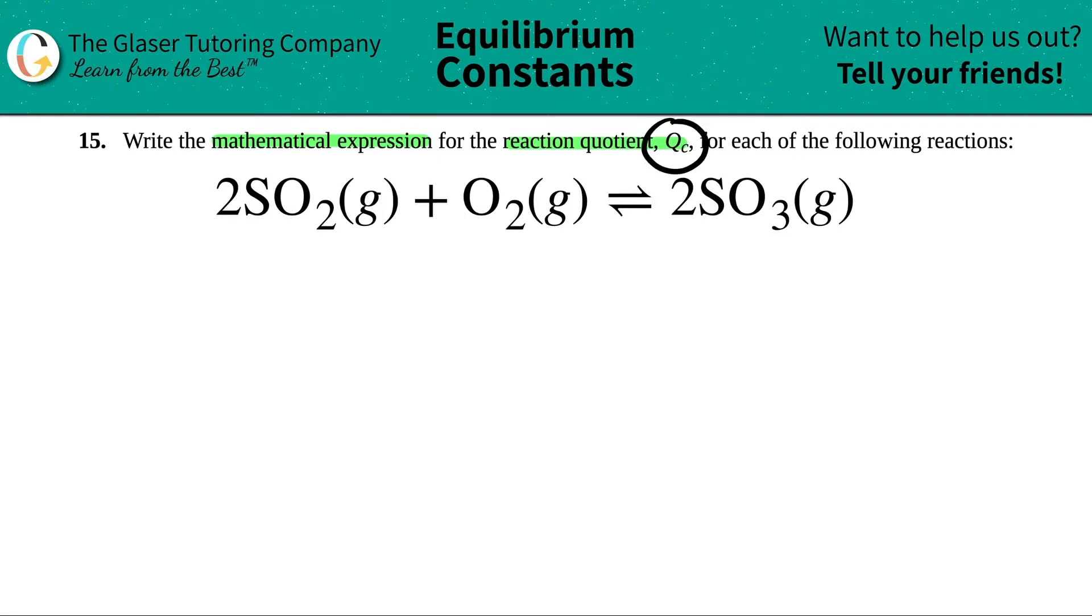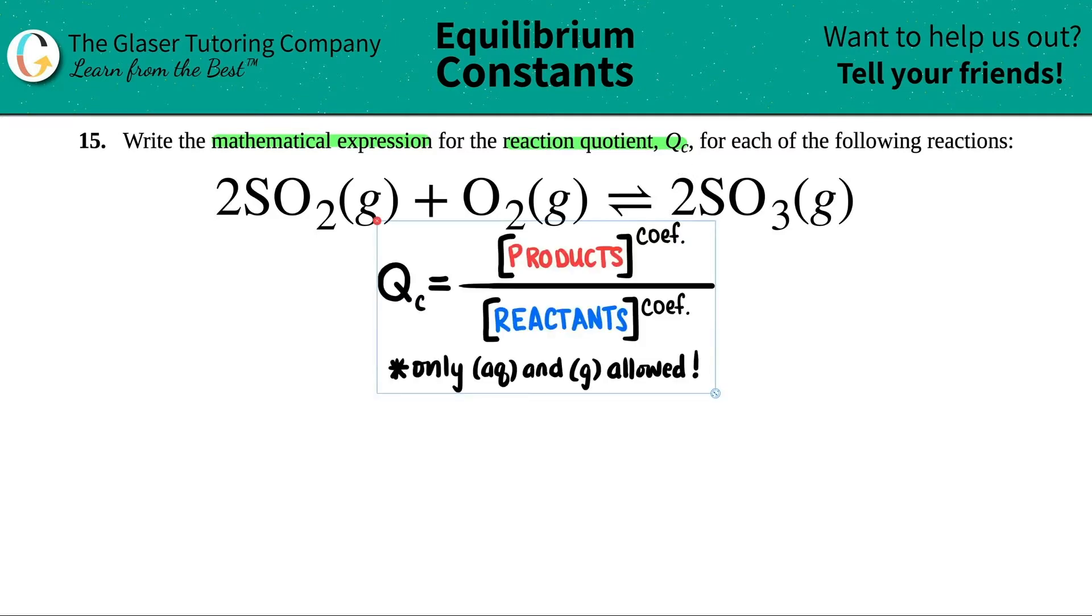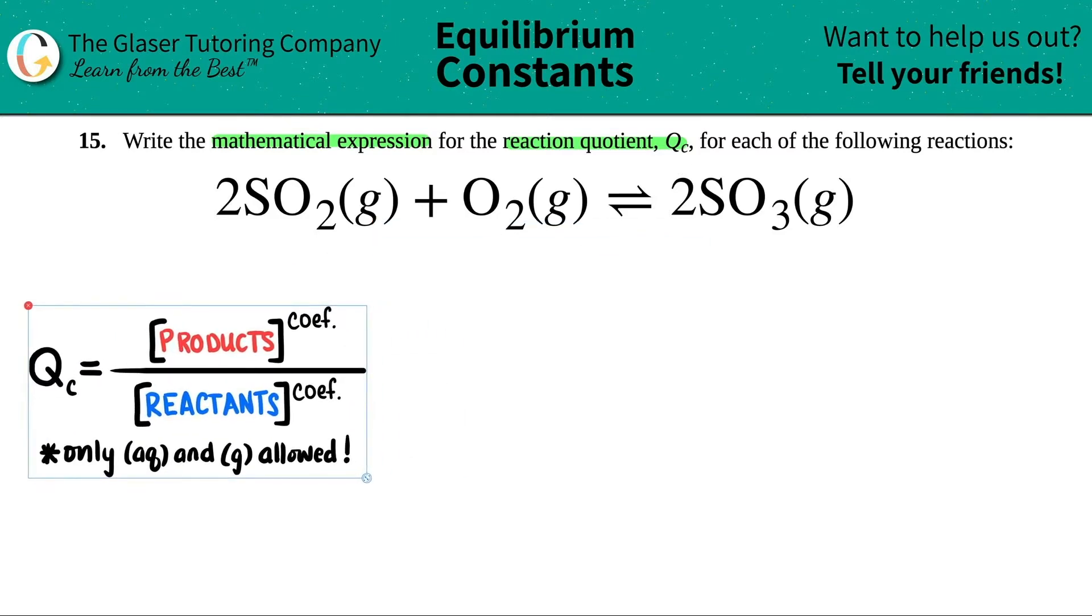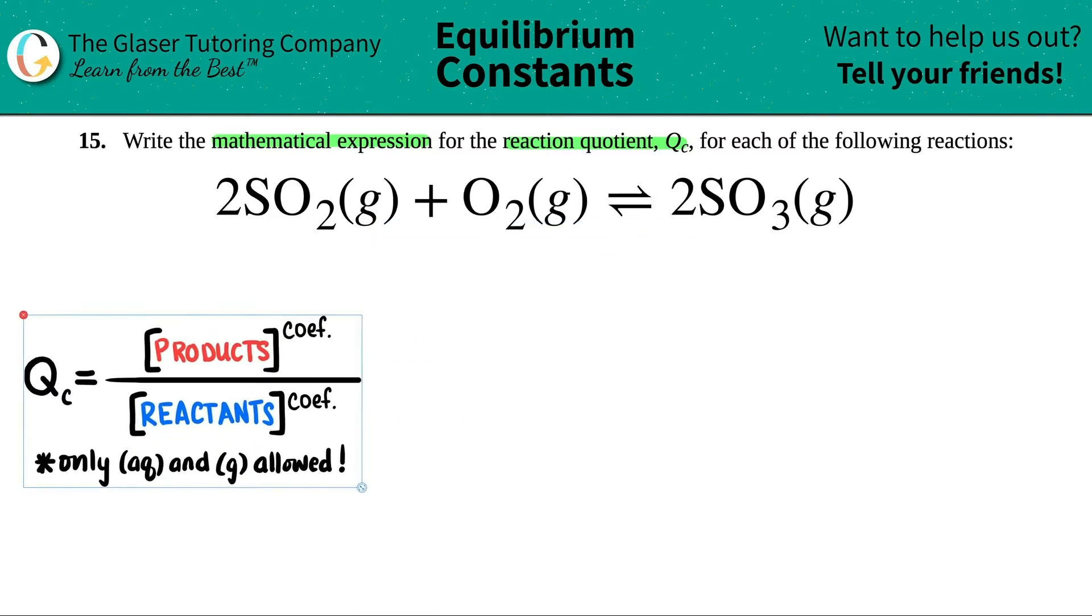Now, writing the QC, there's a very simple general formula, and it's this one. They want you to basically write the formula for products divided by reactants. That's what this is.